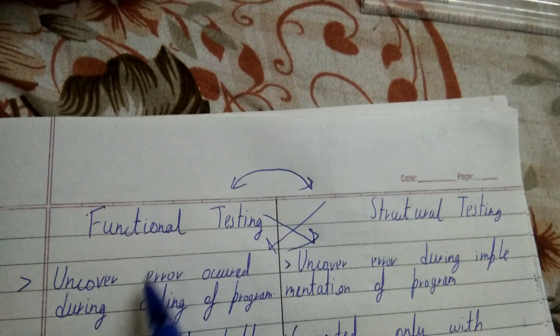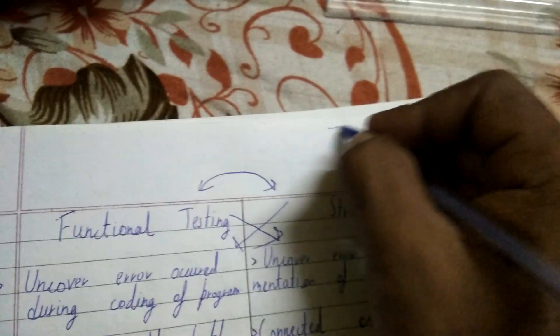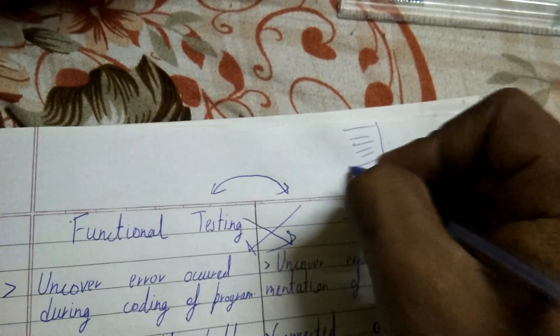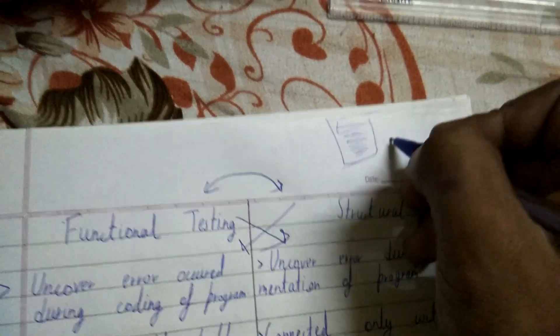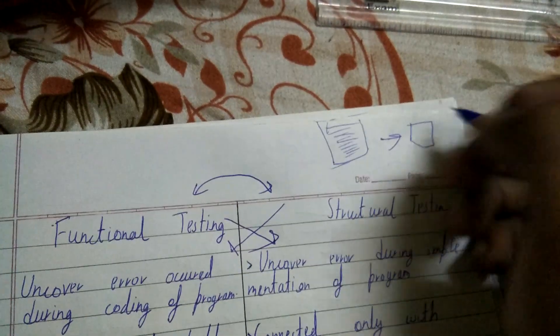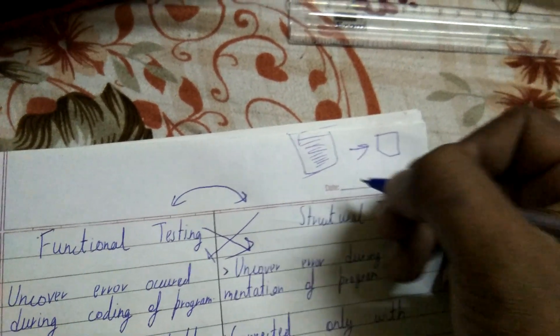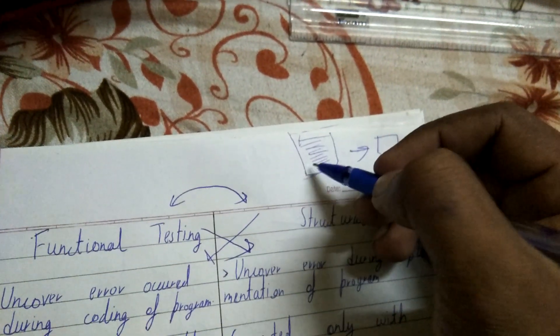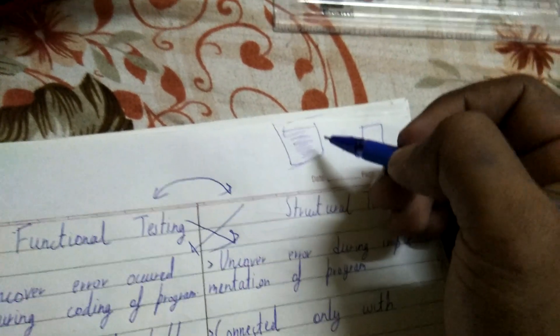So the first difference: structural testing is to uncover errors that occur during the coding of the program — like whatever errors are inside the lines of code. But if we talk about functional testing, it's the implementation of requirements — it's whether the program is doing the right thing it was intended to do. The code could be correct but may not be performing the functions required by the user.